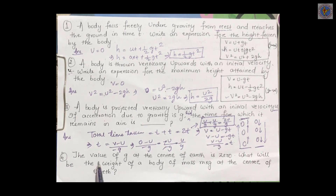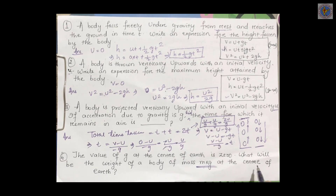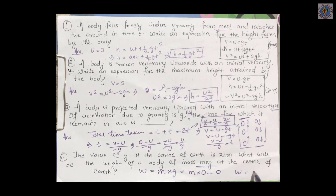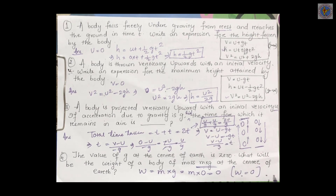Next question: the value of g at the center of earth is 0. What will be the weight of a body of mass m kg at the center of earth? Since weight W = m into g, and g = 0 at the center of the earth, weight = m into 0 = 0. So the weight of the body will be 0 at the center of the earth.